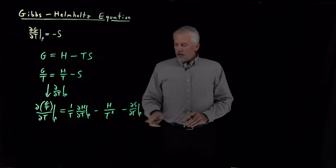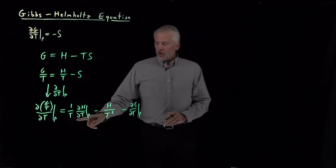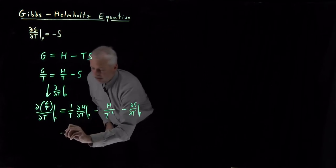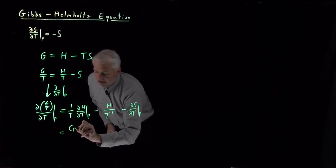So I've evaluated the derivative on the right-hand side, except we actually know what two of these derivatives are. dH/dT at constant P should look familiar. That's, by definition, the heat capacity at constant pressure.